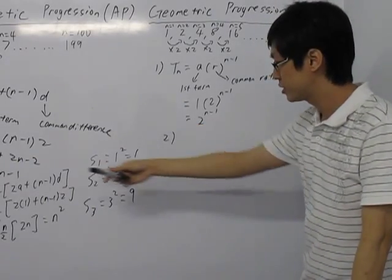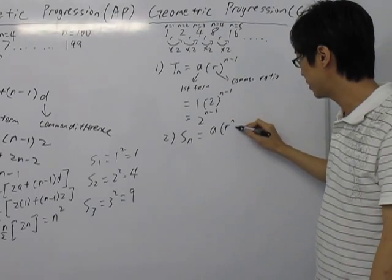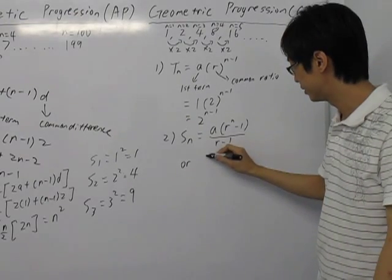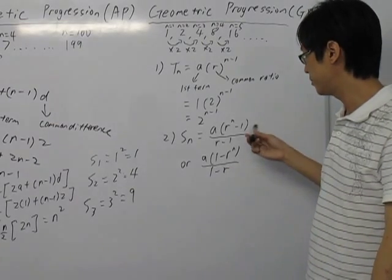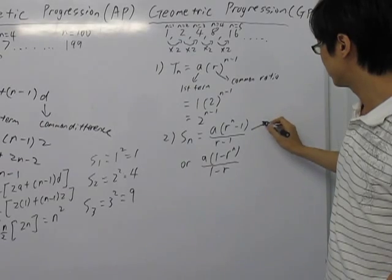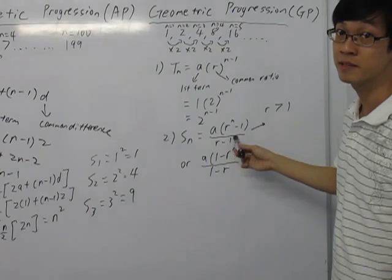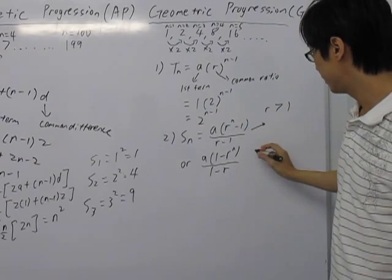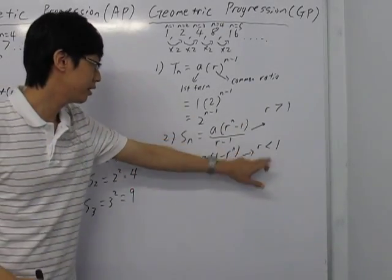The second formula is the sum of the first N terms for GP: SN equals A times (R to the power of N minus 1) over (R minus 1). There is also an equivalent form: A times (1 minus R to the power of N) over (1 minus R). These two formulas are actually the same — if you negate top and bottom of one, you get the other. The first form is usually used when R is greater than 1, to avoid negative signs. The second form is used when R is less than 1.